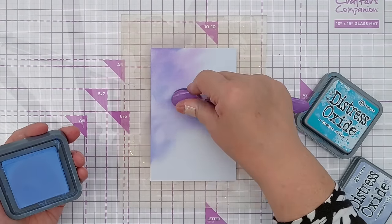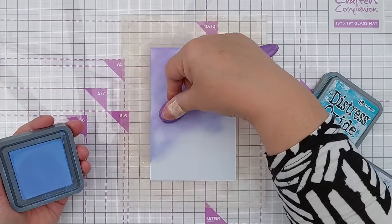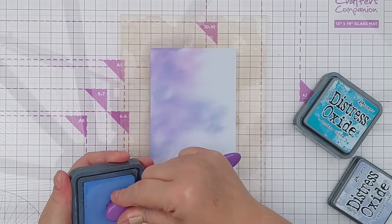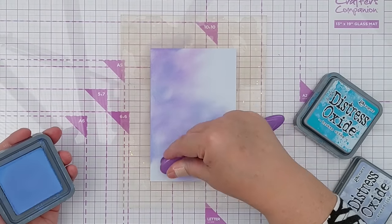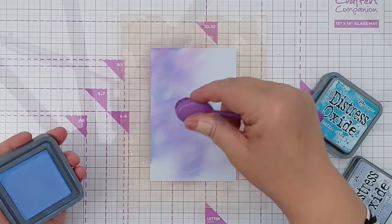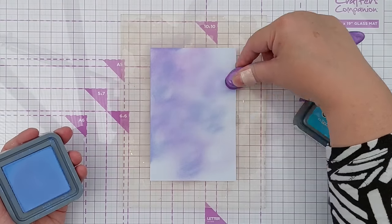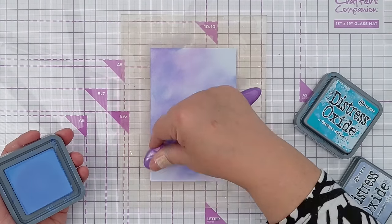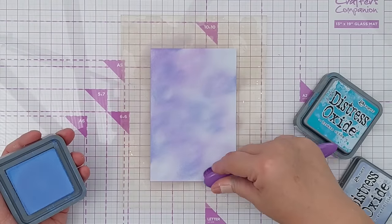I'm going to use Shaded Lilac, although there's a bit of Wilted Violet on this brush still, so I've got a bit of variegated purple. And I'm going to use Broken China, which is a greeny-blue, bluey-green. I think these are nice wintry colors.